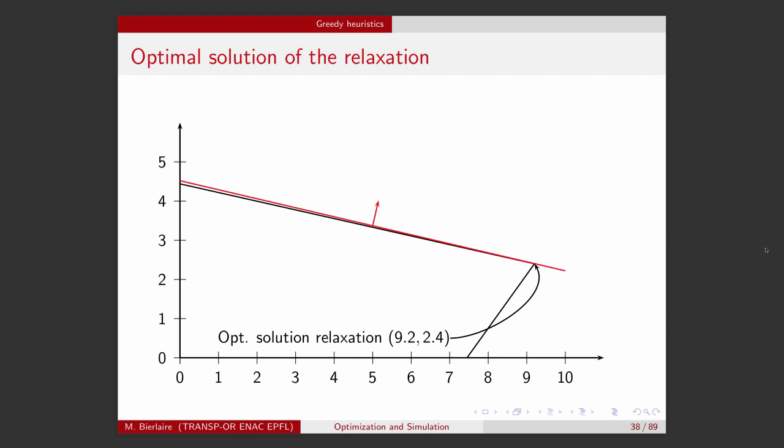Next, we superpose the lattice of integer numbers. So all these black dots correspond to the values of x1 and x2 that are integer. So these are the integrality constraint. And now what we want to do, according to the idea that we suggested for our greedy heuristic, is to round the optimal solution of the relaxation. As you know, there are two ways to round a real number. You can round it down or you can round it up.